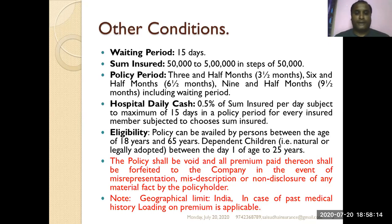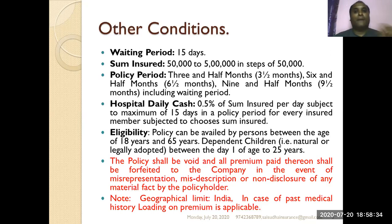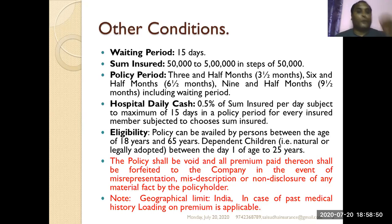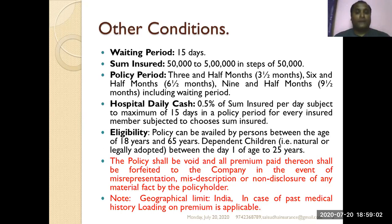Hospital daily cash is 0.5% of the sum insured per day, subject to a maximum of 15 days in a policy period per insured member. For example, if you opt for a sum insured of 2 lakh rupees, 0.5% comes to 1,000 rupees per day as cash benefit, in addition to the medical bills. If you are treated for only 4 days, you receive 4,000 rupees; for 15 days you receive 15,000 rupees. However, the total amount including daily cash should not exceed the total sum insured.